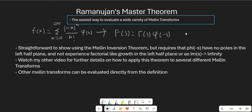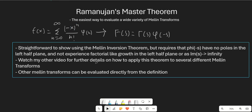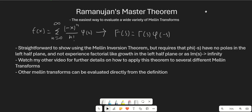You don't want to choose values of phi of s that are going to give you imaginary numbers when s is real and the function is real. I have another video on this that shows how to apply this theorem to several different Mellin transforms, and other Mellin transforms can just be evaluated from the definition. I'll go ahead and link that video — go ahead and watch it if you want to learn how to use Ramanujan's master theorem.